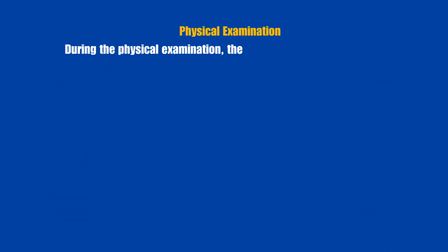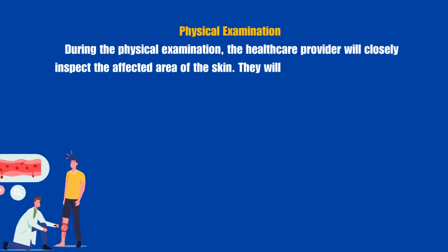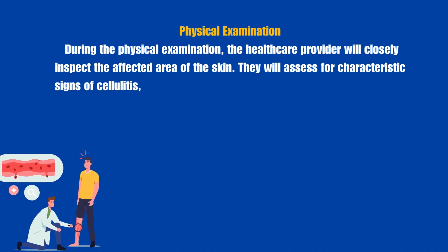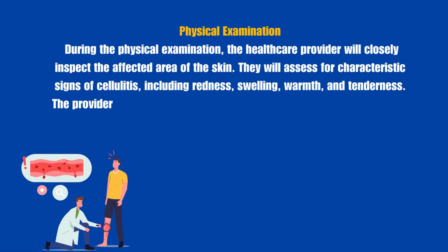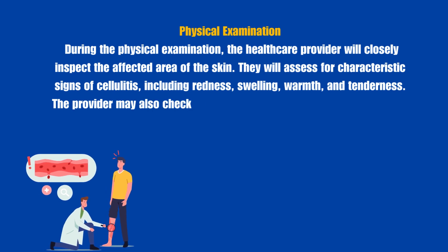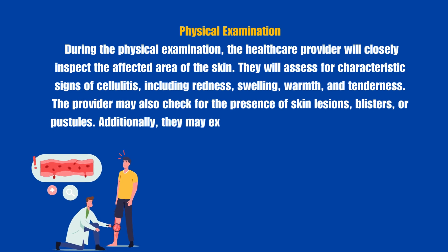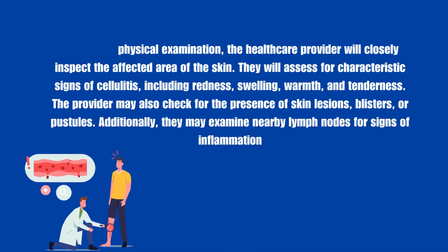Physical Examination: During the physical examination, the healthcare provider will closely inspect the affected area of the skin. They will assess for characteristic signs of cellulitis, including redness, swelling, warmth, and tenderness. The provider may also check for the presence of skin lesions, blisters, or pustules. Additionally, they may examine nearby lymph nodes for signs of inflammation.